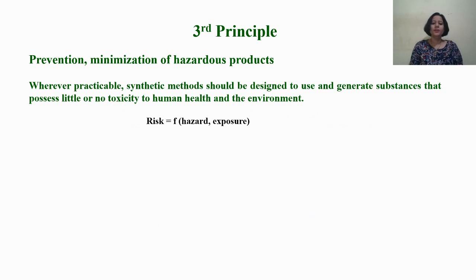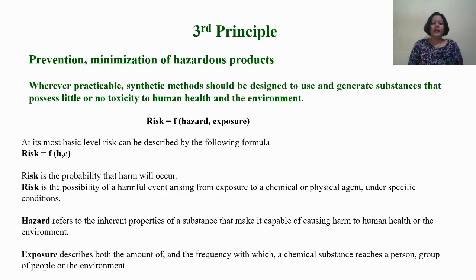Let us start with the third principle of Green Chemistry. This principle is about prevention and minimization of hazardous products. It states that wherever practicable, synthetic methods should be designed to use and generate substances that possess little or no toxicity to human health and the environment. Toxic substances are risky — they possess hazard, and their exposure causes risk.